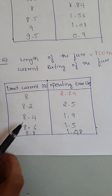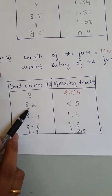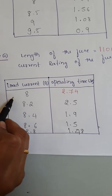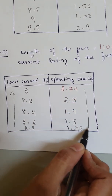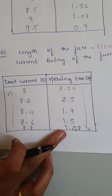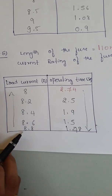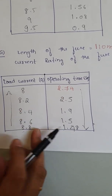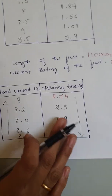As the length of the fuse increases, the operating time also increases. Readings are repeated by increasing the load current in steps of 0.2 amperes. As the load current increases, the operating time decreases — load current and operating time are inversely proportional. These two conditions — case 1 and case 2 — need to be plotted on the graph.